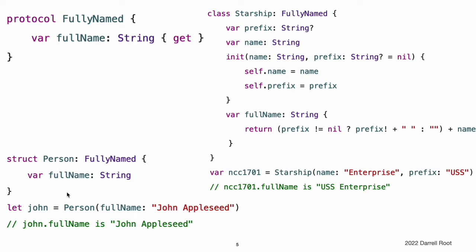Here is an example of a simple structure that adopts and conforms to the fully named protocol. This example defines a structure called person, which represents a specific named person. It states that it adopts the fully named protocol as part of the first line of its definition. Each instance of person has a single stored property called full name, which is of type string. This matches the single requirement of the fully named protocol and means that person has correctly conformed to the protocol. Swift reports an error at compile time if a protocol requirement is not fulfilled. There is also a more complex class which adopts and conforms to the fully named protocol, implementing the full name property requirement as a computed read-only property for a starship. Each starship class instance stores a mandatory name and an optional prefix.